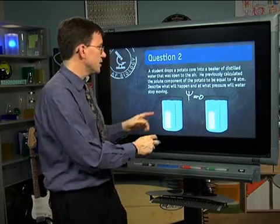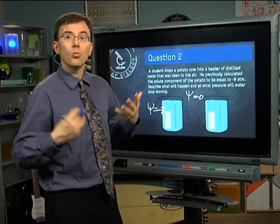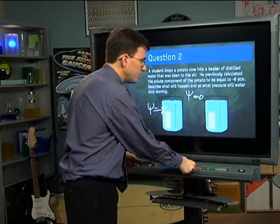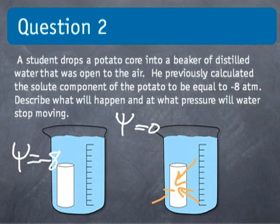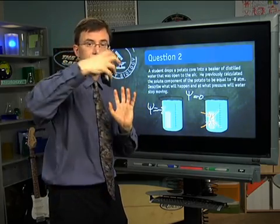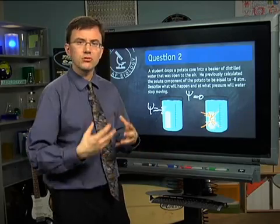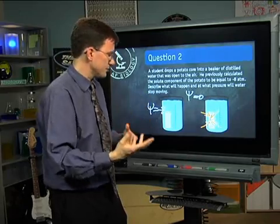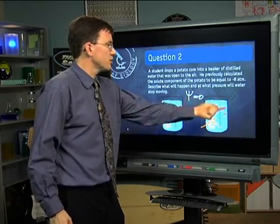Inside the cell, however, it's different. We calculated it to be negative 8 atmospheres. So it has a psi of negative 8. So who's got more potential to donate water? The outside. So we know that water will be moving into the cell. And so water will keep moving in until we reach equilibrium, the same amount of water on the inside and outside. But because the potato cells won't let their proteins and other things diffuse out, we can never get the same amount of water on the inside of the potato as on the outside.